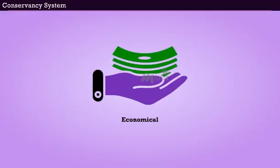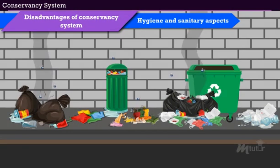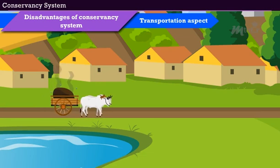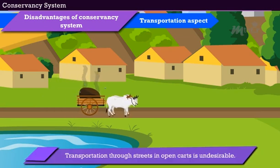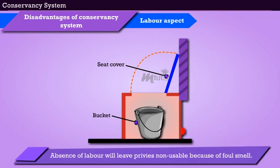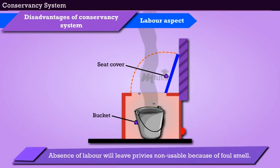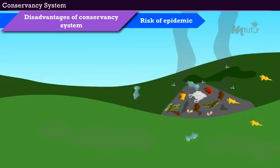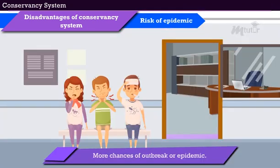Even though this system is economical, it is not recommendable due to various disadvantages. Hygiene and sanitary aspects: the conservancy system is highly unhygienic and causes insanitary conditions. Transportation aspect: transportation through streets in open carts is undesirable. Labor aspect: as the disposal is entirely dependent on labor, their absence will leave privies non-usable due to foul smell. Building design aspect: latrines are to be located outside the house, so compact design is not possible. Risk of Epidemic: due to improper or careless disposal of night soil, there are more chances of an outbreak or epidemic.